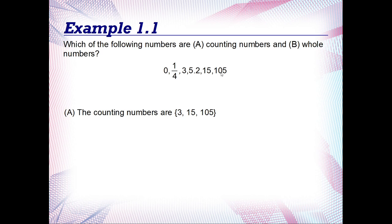Now we know that the whole numbers are the counting numbers—so it's going to be 3, 15, and 105—and zero. Since zero's in the list, so the whole numbers are 0, 3, 15, and 105.